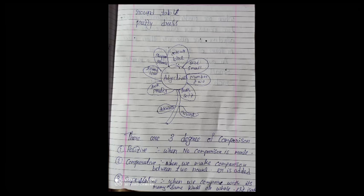Round table. What kind of table it is? Round. Pretty dress. What kind of dress it is? Pretty dress. Okay.